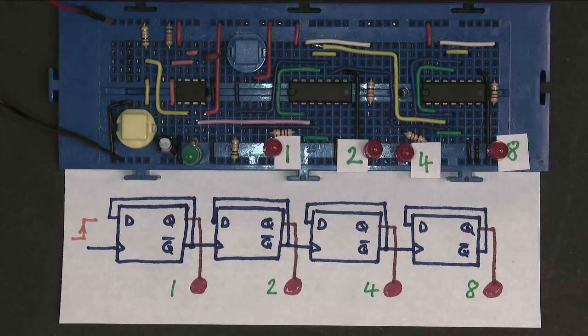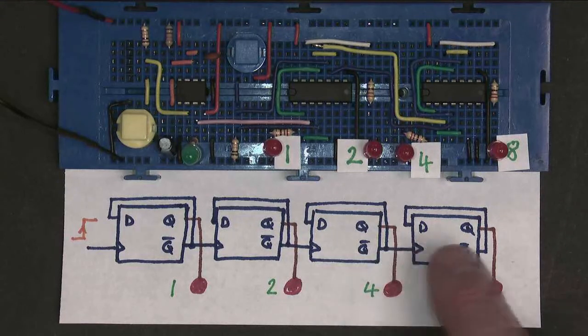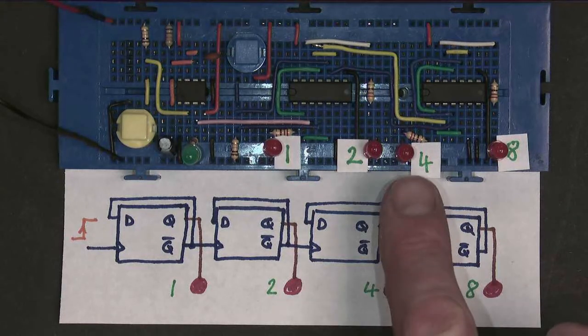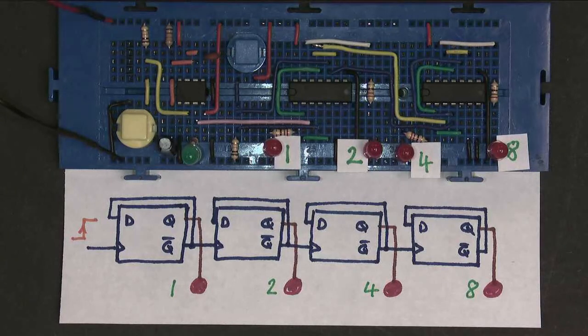What I've done here is I've expanded my circuit. I've added two more D-type flip-flops on, this one here and this one here, with our associated LEDs for four and eight, so that I can demonstrate counting in binary.